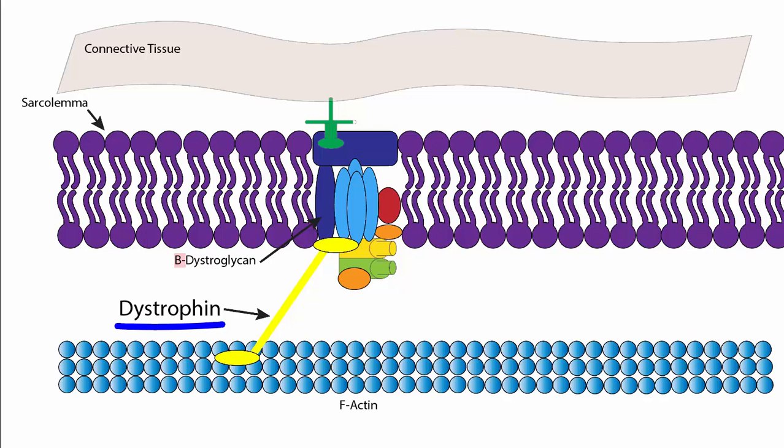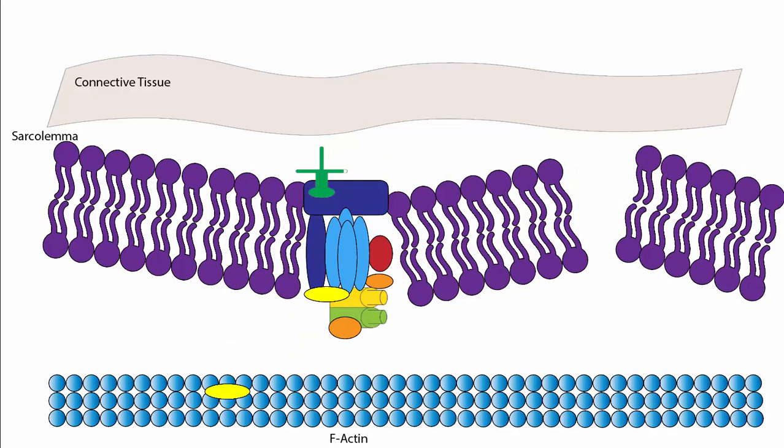Without dystrophin, these forces are not effectively transmitted, resulting in muscle weakness. So if a person doesn't have dystrophin or has a defective one, the muscle cell is weak and loses the necessary support to prevent damage. For this reason, those with MD easily damage their sarcolemmas of their muscle cells.